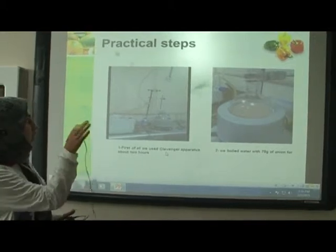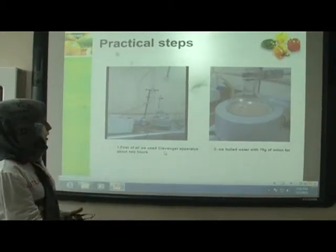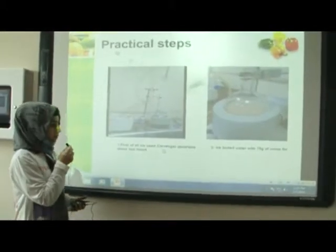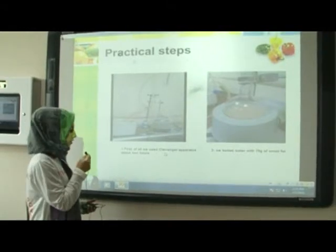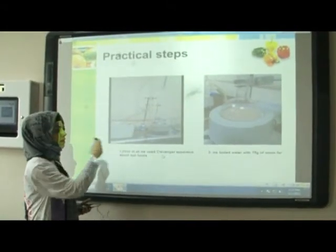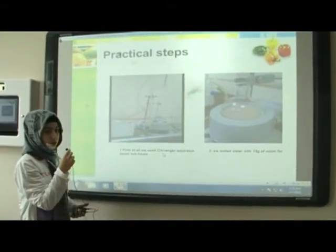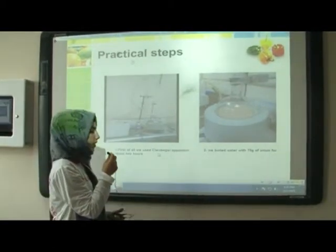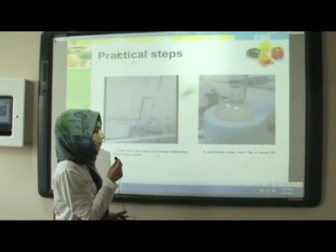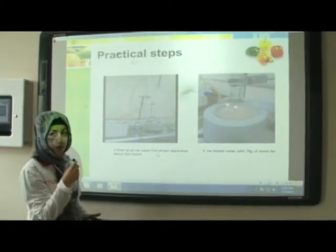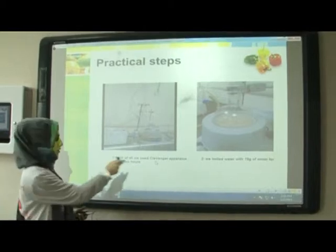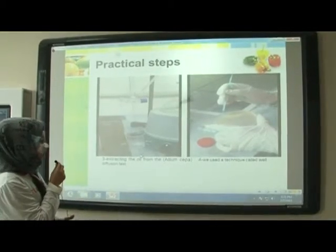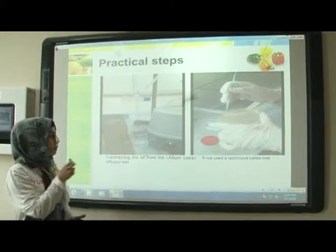And these are our practical steps. First of all, we use a lavender apparatus, which is this biological machine. After that, we boil the water with 75 grams of onion for two hours, and extract the oil from the oleum sepa.